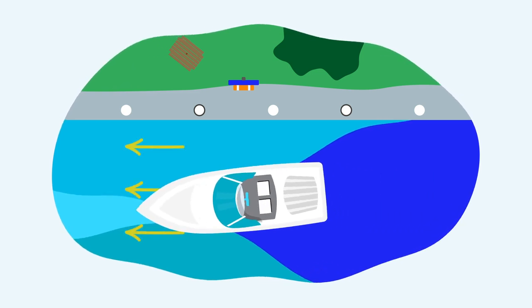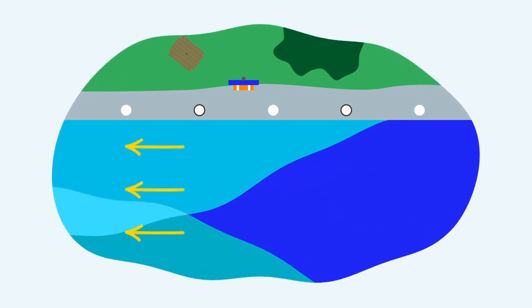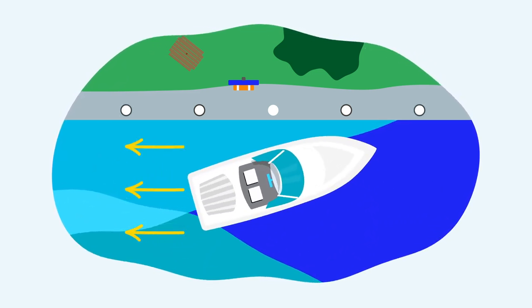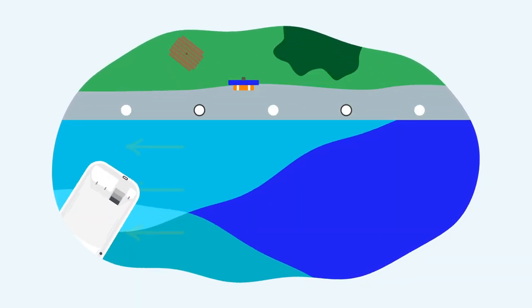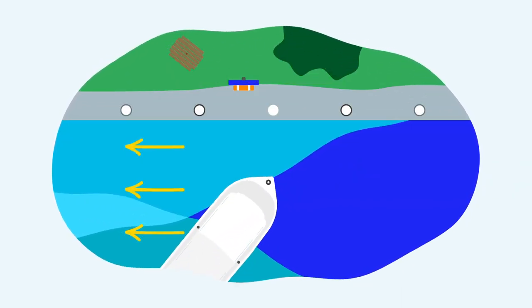If you're heading downstream, this means you'll need to pass the mooring and turn your boat around. The same applies if you have a very strong wind behind you.